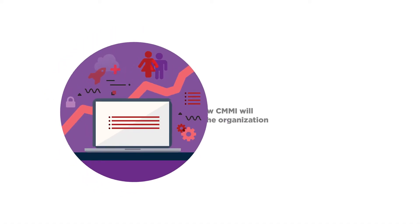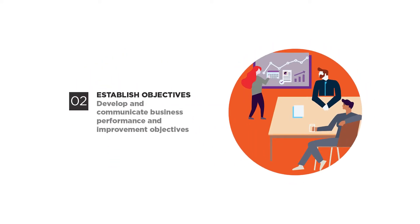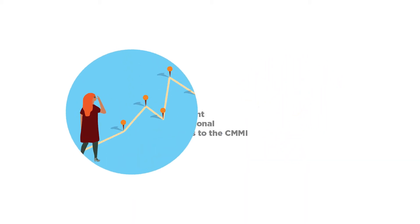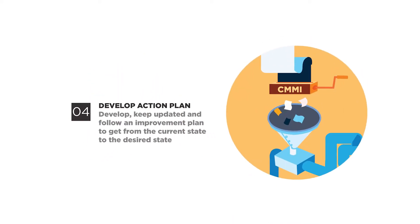Let's briefly examine the six steps. Step one: Learn. In this step, the organization learns how CMMI will be of benefit in its specific environment. Step two: Establish Objectives. Here, the organization establishes its performance improvement objectives, making sure they are aligned to the organizational objectives. Step three: Analyze. In this step, the organization maps its current processes to the CMMI. Step four: Develop Action Plan. After process mapping, the organization develops, keeps updated, and follows an improvement plan to get from the current state to the desired state.